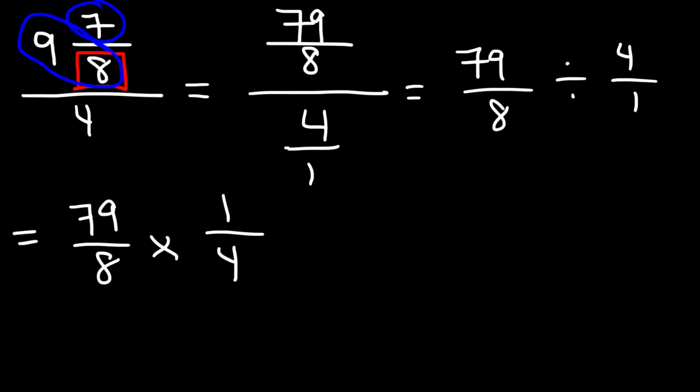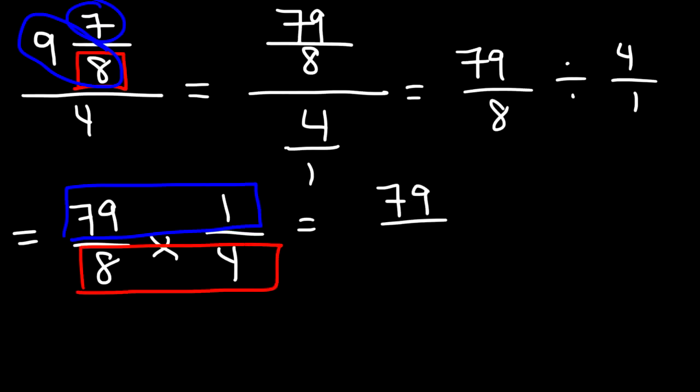Now 79, we can't really break that into anything. So I'm just going to multiply 79 and 1. So that's going to be 79. And then 8 times 4, which is 32.